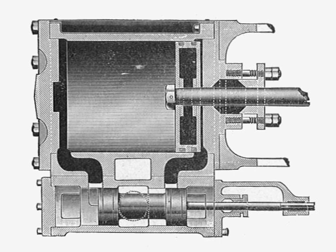Most piston valves are of the inside admission type, where fresh steam is introduced from the boiler via the space between the two piston heads of the valve, and exhaust steam leaves via the space between a piston head and the end of the steam chest. The advantage of this arrangement is that leakage via the gland, which seals the steam chest from the operating rod of the valve gear, is much less of a problem when the gland is subjected to low exhaust pressure rather than full boiler pressure.